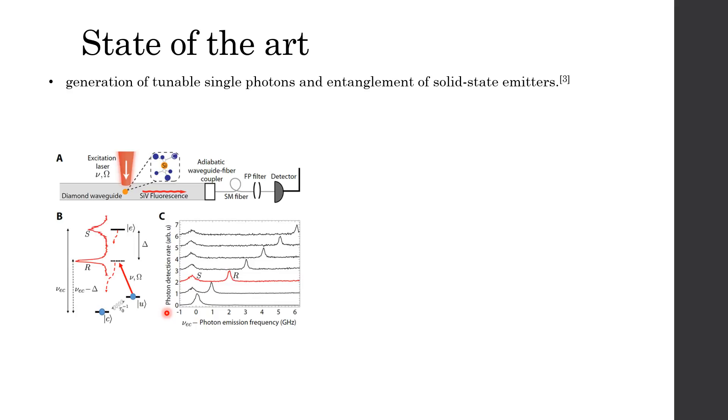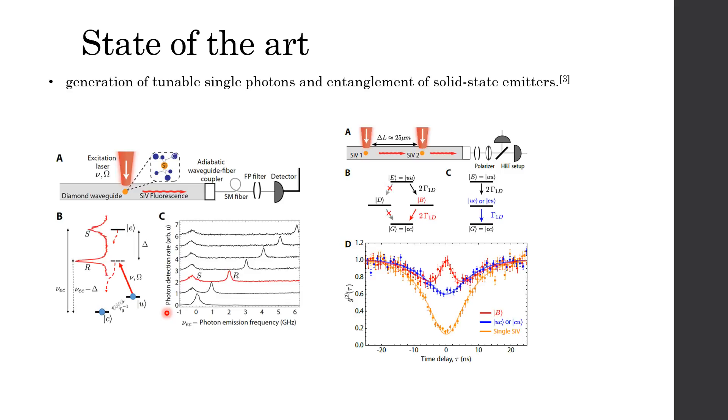For two independent emitters in state U, each SiV center scatters the Raman photons to the waveguide at a rate gamma d. When the Raman transition of the two SiV centers are tuned into resonance with each other, it is fundamentally impossible to distinguish which of the two emitters produces a waveguide photon. Therefore, detection of an indistinguishable single photon leaves the two SiV centers prepared in the entanglement state psi. And here the phi is set by the propagation phase between two emitters set by delta L and the relative phase of driving lasers.